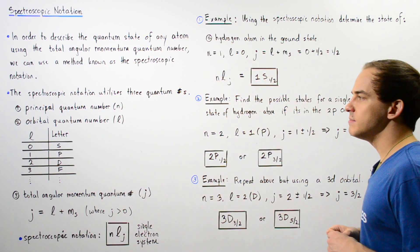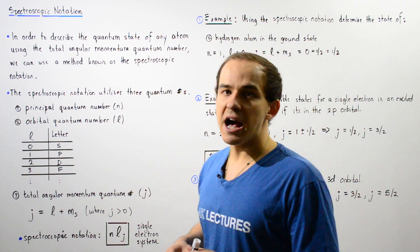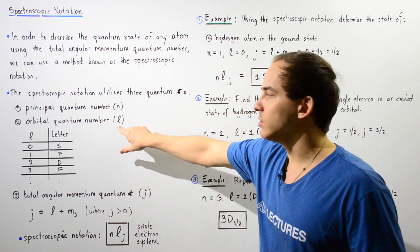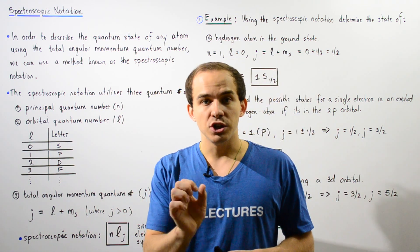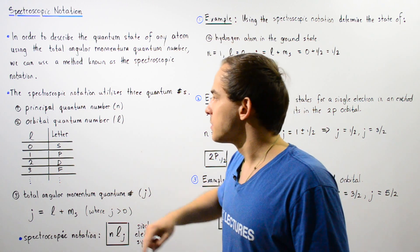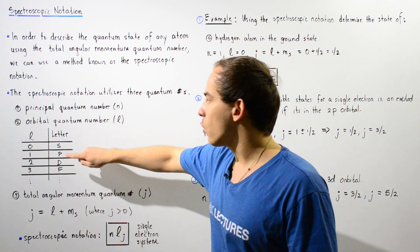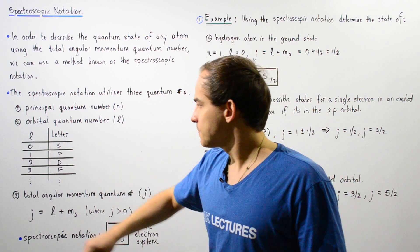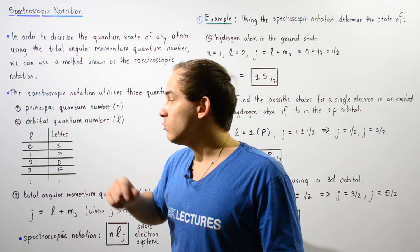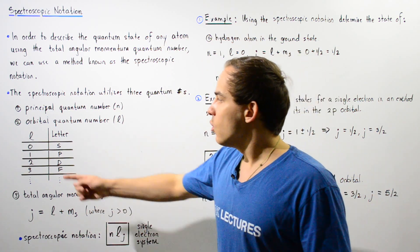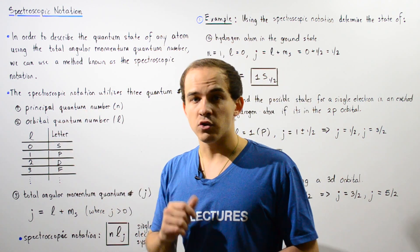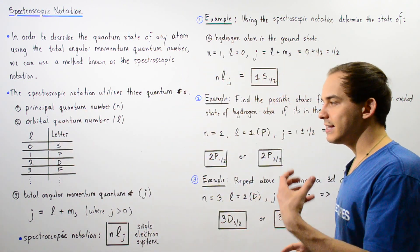The second quantum number that spectroscopic notation uses is the orbital quantum number given by lowercase l. But instead of using the numerical value, we use a letter. When l is equal to 0, that corresponds to capital S. When l is equal to 1, that corresponds to capital P. When l is equal to 2, that corresponds to capital D. When l is equal to 3, that corresponds to F. When l is equal to 4, that corresponds to G, and so on.